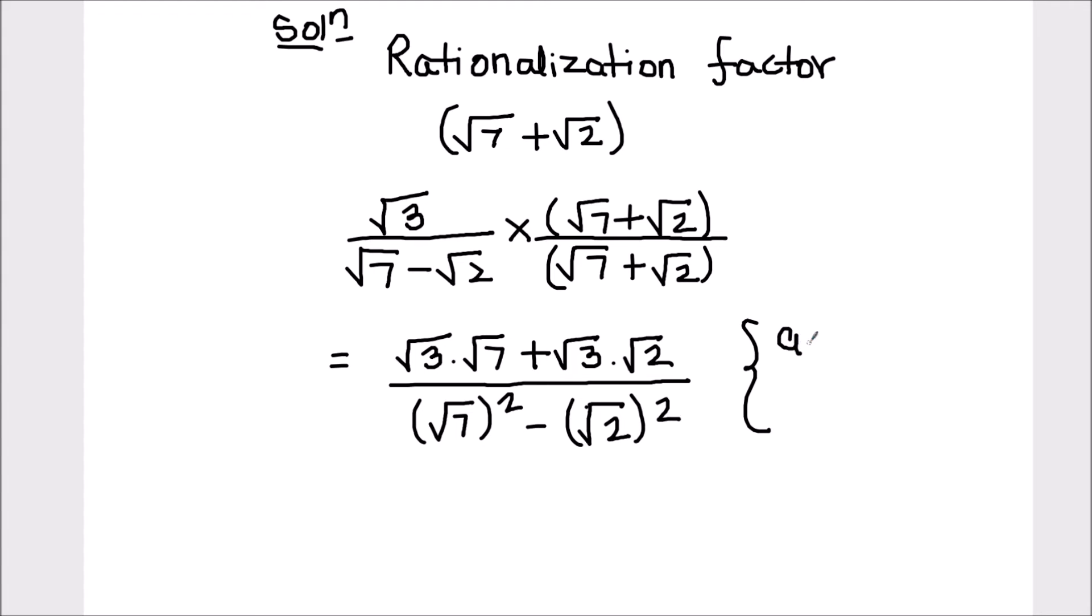So we have used the identity a plus b times a minus b equals a square minus b square. We can directly use this identity or we can multiply the two terms. Two terms will be cancelled and we will be left with root 7 square minus root 2 square.